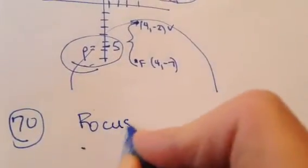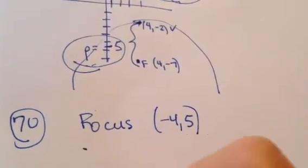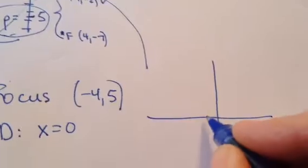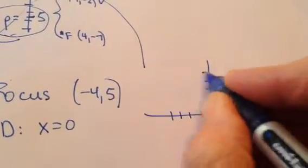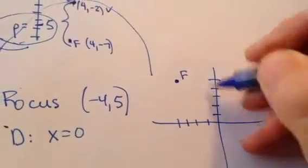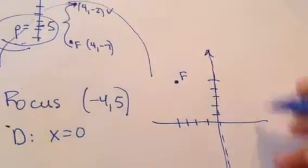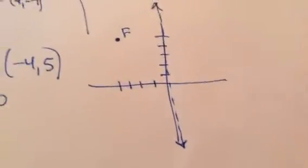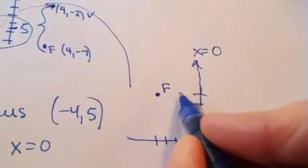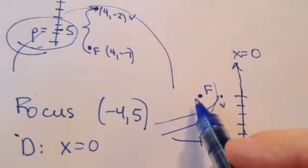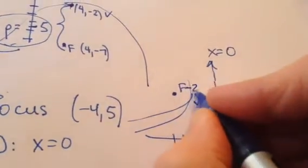Let's look at number 70. They want you to write the equation. They tell me the focus is (negative 4, 5) and the directrix is the line x equals 0. I am into graphing: 1, 2, 3, 4 and 1, 2, 3, 4, 5 — right here is my focus. My directrix is the line x equals 0, which looks like this because it hits the y-axis. So this is the line x equals 0, which means my vertex is going to be halfway between these two.